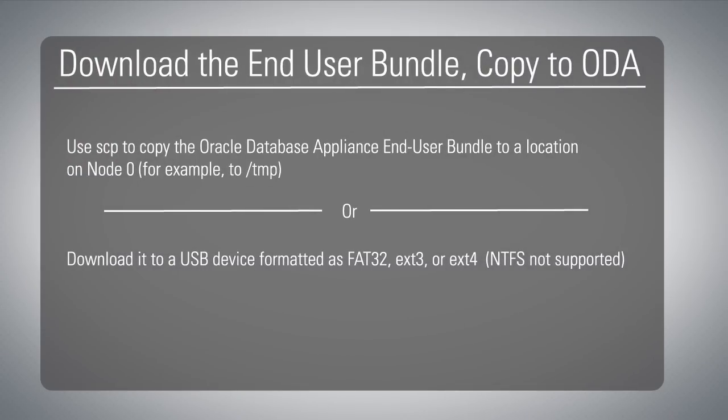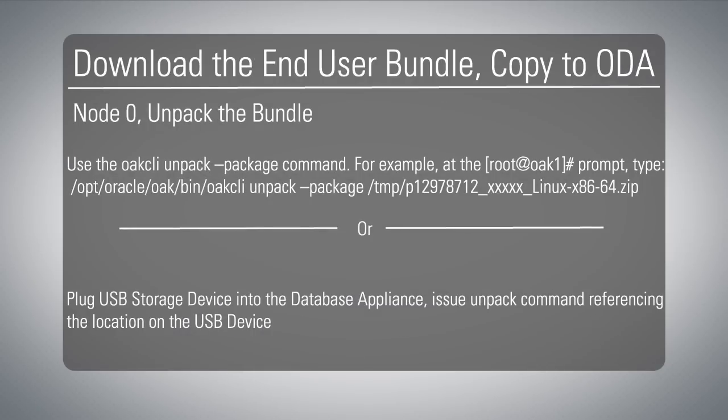We've just seen a demo of how to identify the right end user bundle to download. We've downloaded it to our laptop or desktop system. Now we're ready to upload it to the database appliance. Use SCP to copy it up to the database appliance to node 0 — a lot of people put it in a directory /tmp. Another way to do this is to download the end user bundle to a USB device, then take that USB device, mount it on the database appliance, and do the unpack.